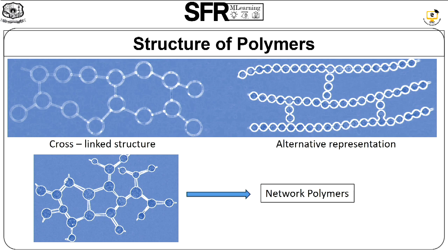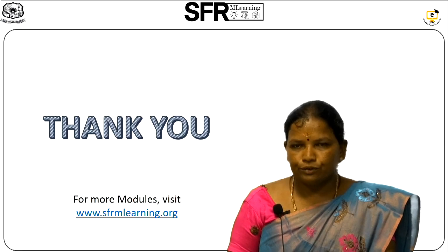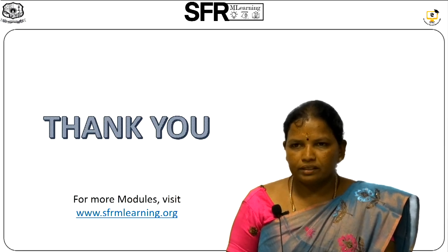The cross-linked polymer has monomeric units linked together to constitute a 3D network; the links involved are called cross-links and they are hard, rigid, and brittle due to their network structure. The last type is the network polymer, which includes numerous intermolecular interconnections between chains — as you can see in the figure, many interconnections are available. Thank you so much for watching this video.